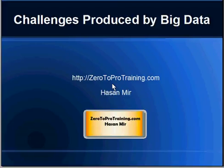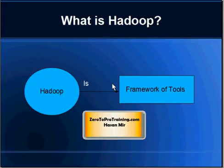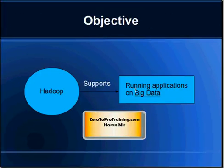Hello. In this session we will talk about challenges produced by Big Data and how Hadoop is addressing them. This is Hassan Mir from Zero2ProTraining.com. From the previous videos we understand that Hadoop is a framework of tools and the objective is to support running of applications on Big Data. So why do we require Hadoop to support running of applications on Big Data, and how were applications run before? In this video we will talk about the challenges that Big Data is producing and why there was a need to create something like Hadoop.